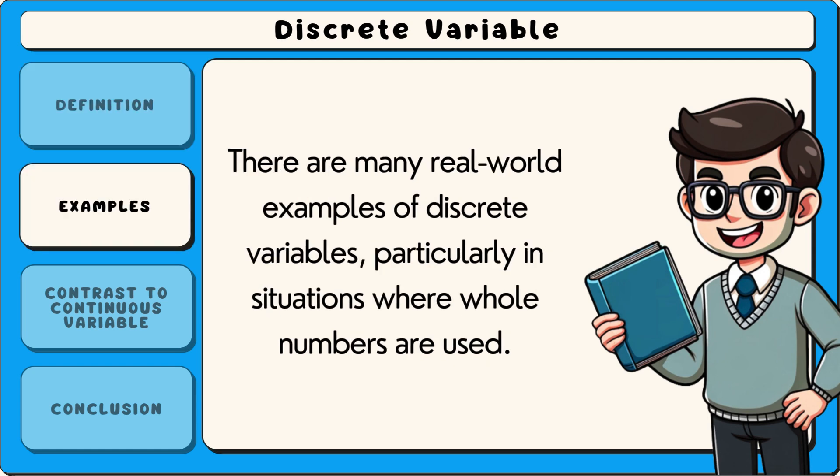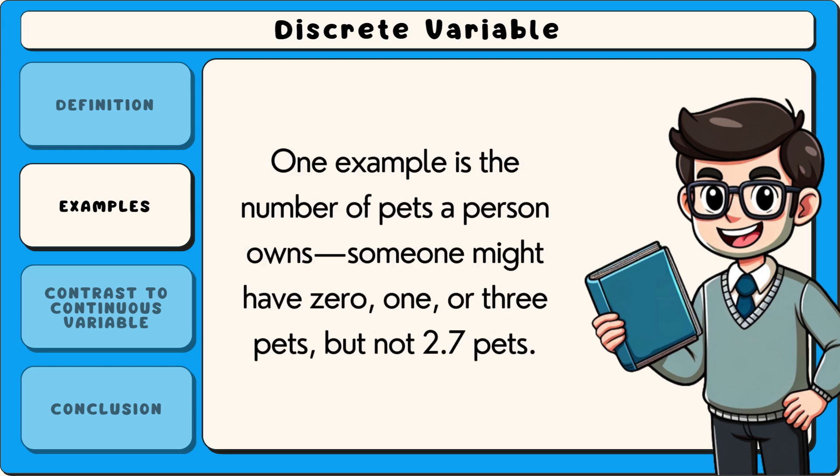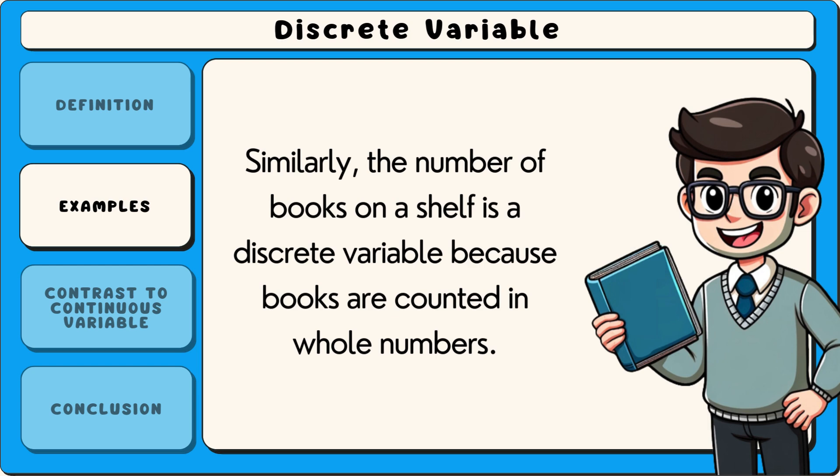There are many real-world examples of discrete variables, particularly in situations where whole numbers are used. One example is the number of pets a person owns — someone might have 0, 1, or 3 pets, but not 2.7 pets. Similarly, the number of books on a shelf is a discrete variable, because books are counted in whole numbers.